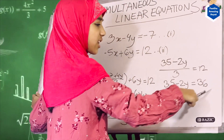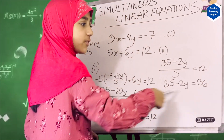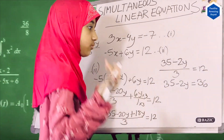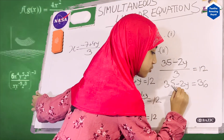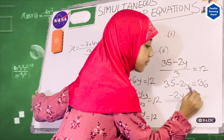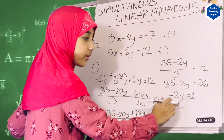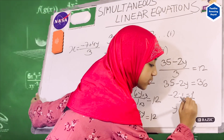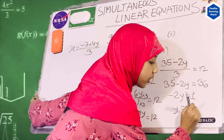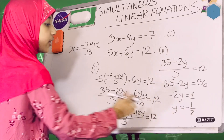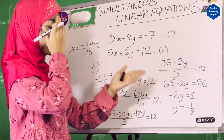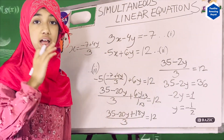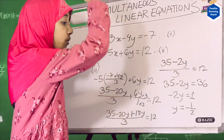Then we subtract 35 from both sides: 36 minus 35 is 1, so minus 2y equals 1. Dividing both sides by minus 2, y equals minus 1 over 2. So we figured out our y value — not our y equation, our actual y value. After inserting the x equation into equation 2, we figured out that y equals minus one-half.